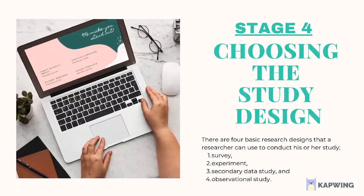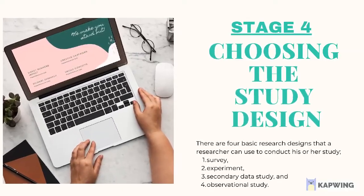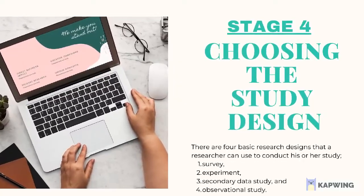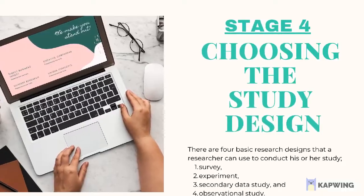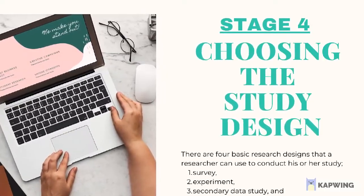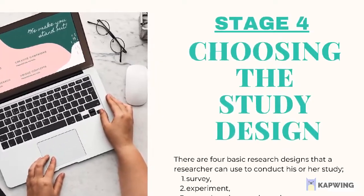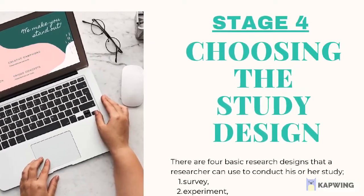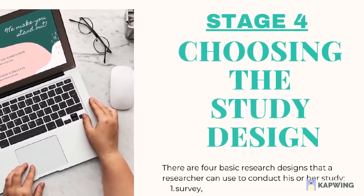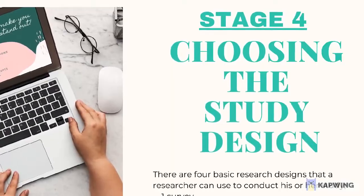Step 4: Choosing the study design. The research design is the blueprint or framework for fulfilling objectives and answering research questions. It is a master plan specifying the methods and procedures for collecting, processing, and analyzing the collected data. There are four basic research designs: 1. Survey, 2. Experiment, 3. Secondary data study, and 4. Observational study. The type of research design chosen depends primarily on four factors: the type of problem, the objectives of the study, the existing state of knowledge about the problem being studied, and the resources available for the study.